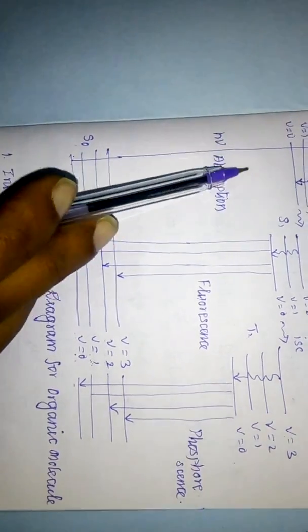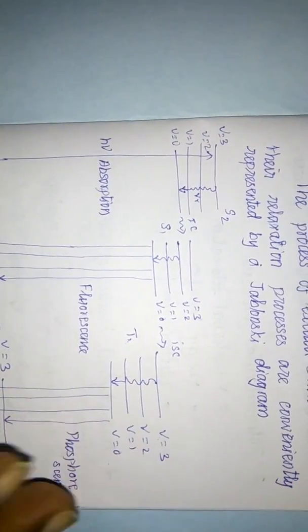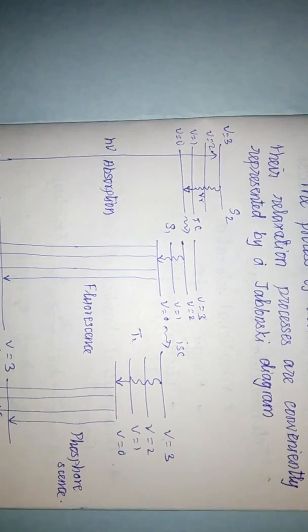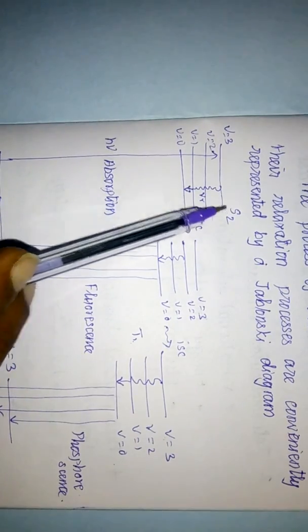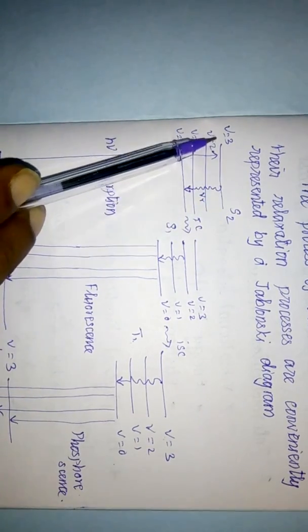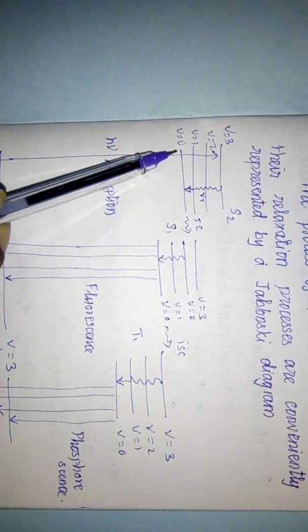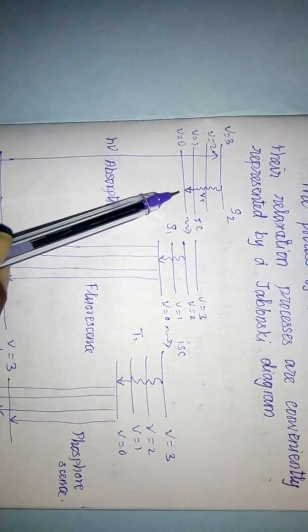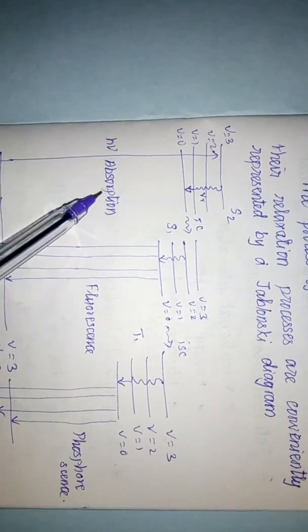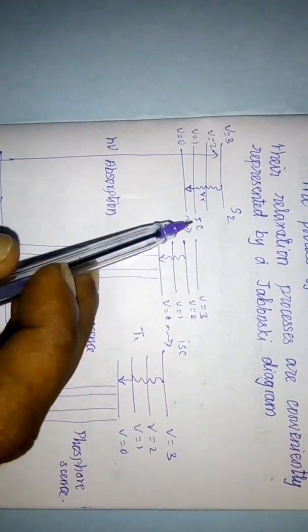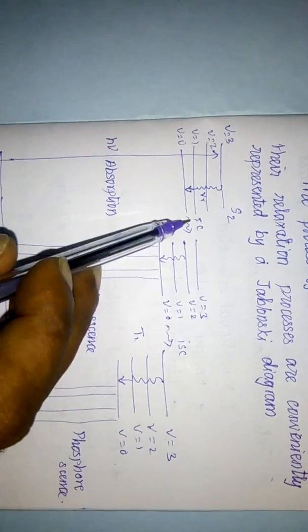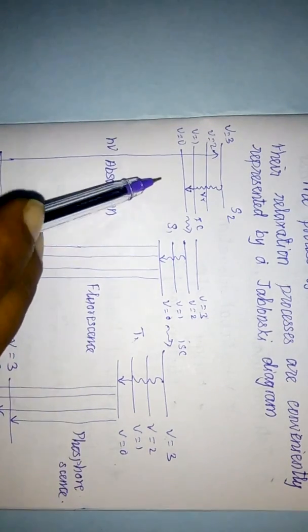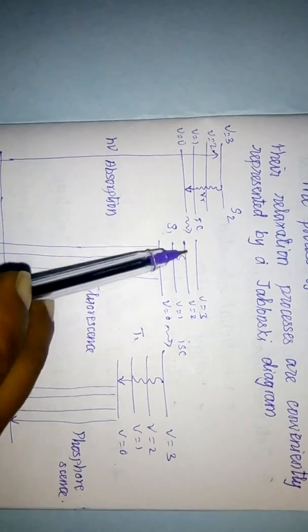During excitation the electron moves from the S0 ground state to the S2 state at vibrational level V=3. It then relaxes to the ground vibrational level V=0 — from the higher vibrational level to the ground vibrational level. During internal conversion (IC), it moves from the ground vibrational level of S2 to the higher vibrational level of the S1 state.